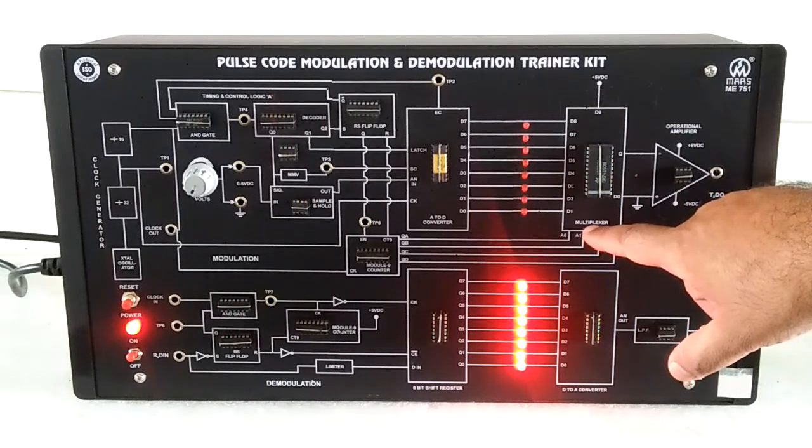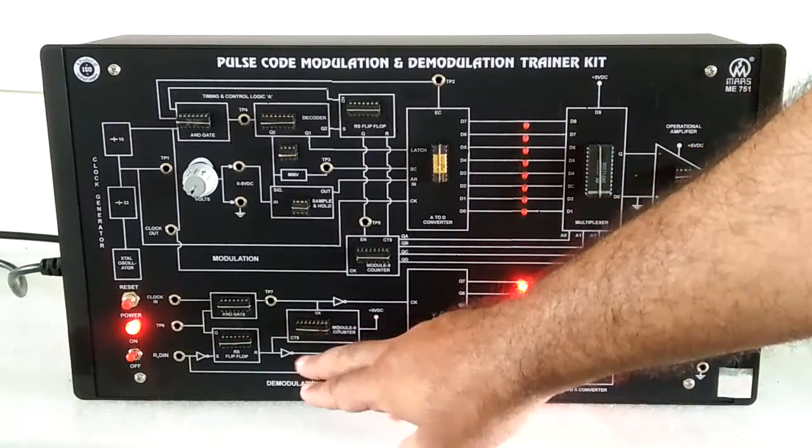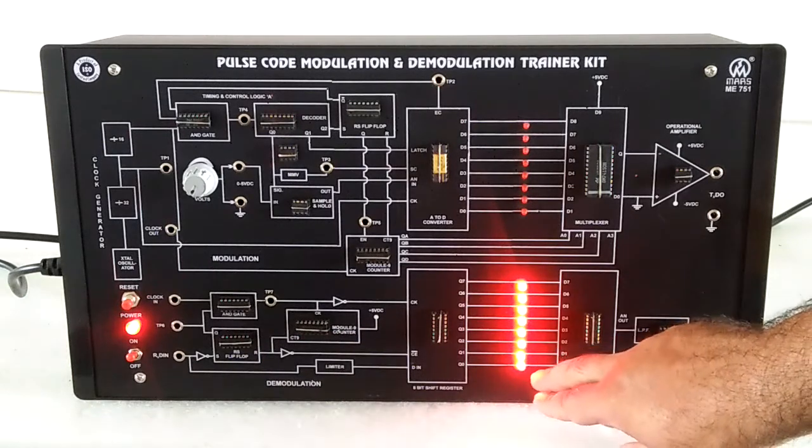Then there is a multiplexer, parallel in serial out, from the modulation circuit. Then it comes to the demodulator, where we get the serial data and output.